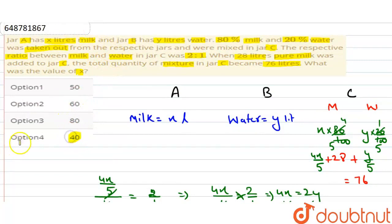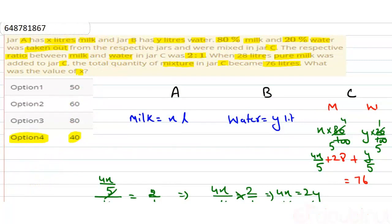Question میں ہم سے کیا پوچھا گیا - what was the value of x - تو x کی value 40 آئی ہے، جو کہ ہمیں 4th option میں given ہے. So option 4 will be the correct answer to this question. Thank you.